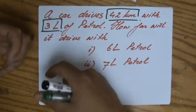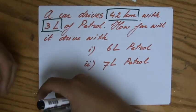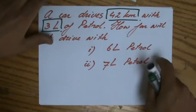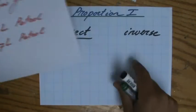If one variable decreases, so let's say I have half of 3 liters of petrol, then the distance will also decrease, will become half of 42. So that is direct proportion.